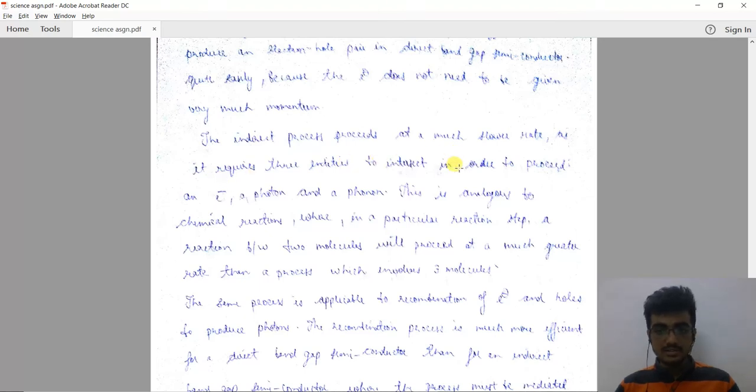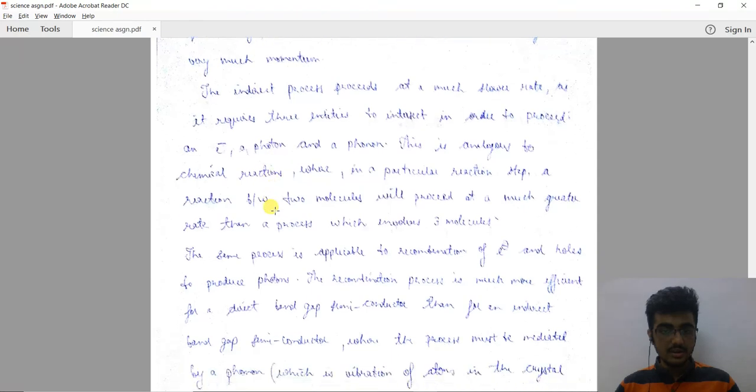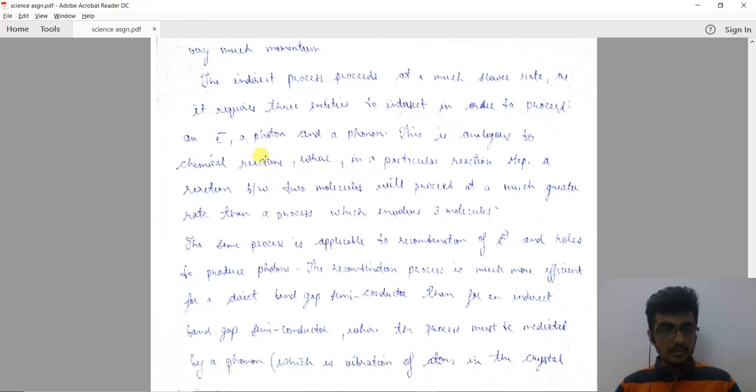It requires three entities to intersect in order to proceed: an electron, a photon, and a phonon. This is analogous to a chemical reaction where a particular reaction step...